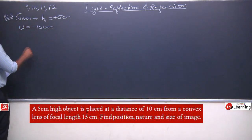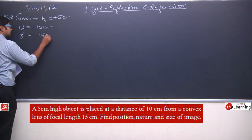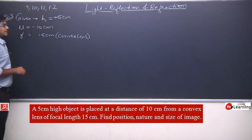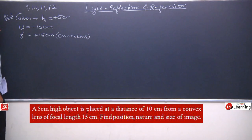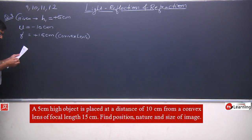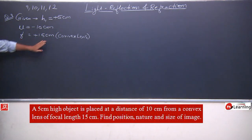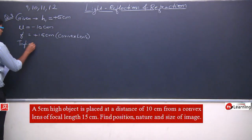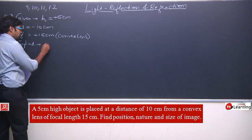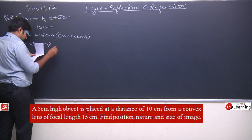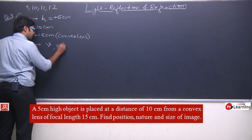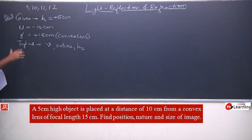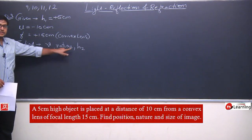From a convex lens of focal length 15 centimeters, focal length is given as 15 centimeters. Now since this is a convex lens, focal length will be positive. Convex lens humne maana hai, so f equals plus 15 centimeters. Now he is asking to find v, that is position of the image, then nature and size — in teen cheezon ko hume pata karna hai.